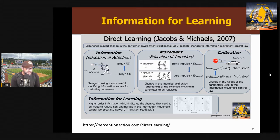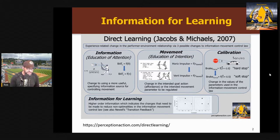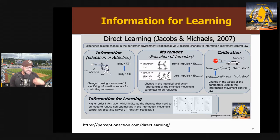Also within this idea, which is of course Jacobs and Michaels' theory, is that there's information for learning that gives us information about how we're proceeding, how our search for a new solution is going — are we heading in the right direction? So it's not telling us about our performance so much as it's telling us about our search. I think this is very analogous to Newell's idea of transition feedback — it's telling you whether your search is headed in the right direction. Using the constraints-led approach and the ecological approach, there are different ways we can augment this information to help a learner find a new solution more easily.